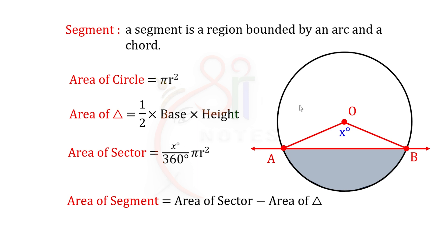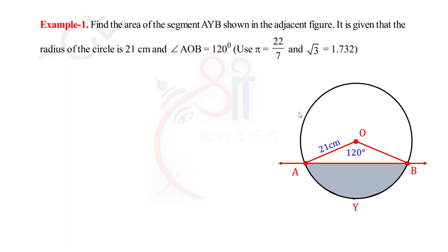Now we will look at an example of the area of a segment. We will find the area of segment AYB shown in the adjacent figure. It is given that the radius of the circle is 21 centimeters and angle AOB is equal to 120 degrees. Use pi equal to 22 by 7 and root 3 equal to 1.732.